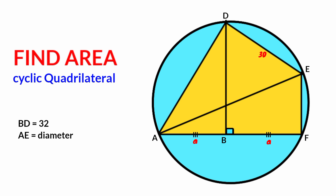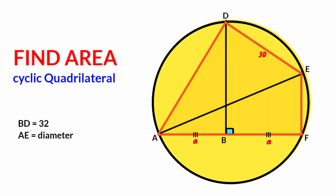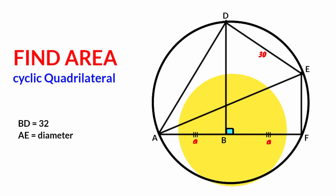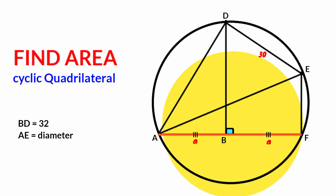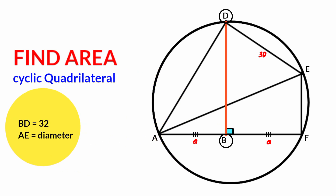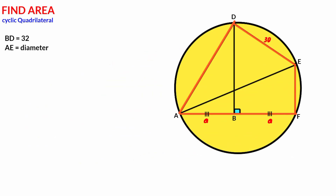Hi friends, welcome back to another interesting question. We are asked to calculate the area of the cyclic quadrilateral shown here. We have the length of this chord to be 30 units. We see line segment AB and PF are congruent, as their lengths are equal. It is given that line BD is 32 units in length, and line AE is a diameter. So how can we calculate the area of the cyclic quadrilateral?